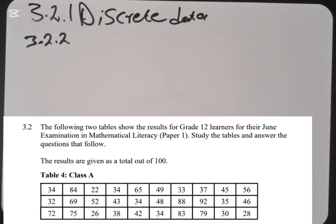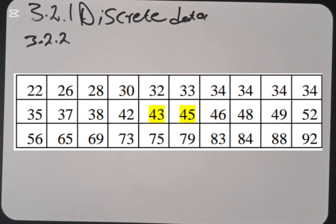3.2.2 says determine the median for class A. Obviously, we know that median is the middle number in class A. So what we need to do is to first arrange this in ascending order. You arrange this in ascending order, that is the first step.